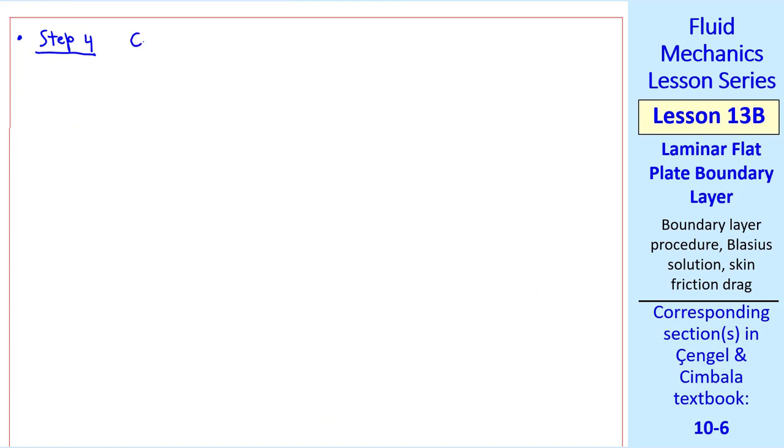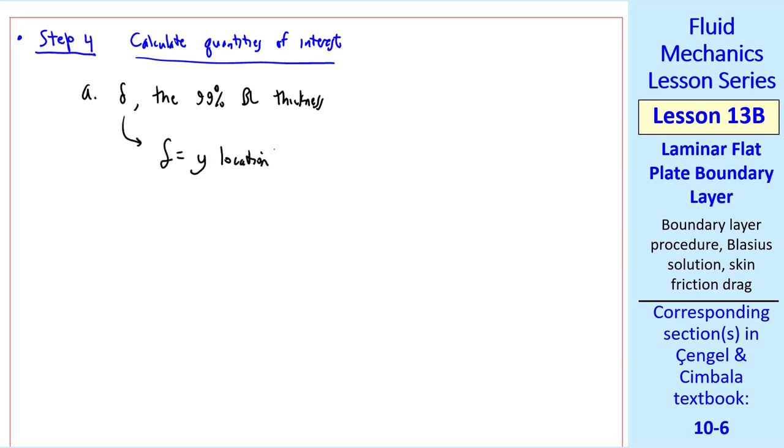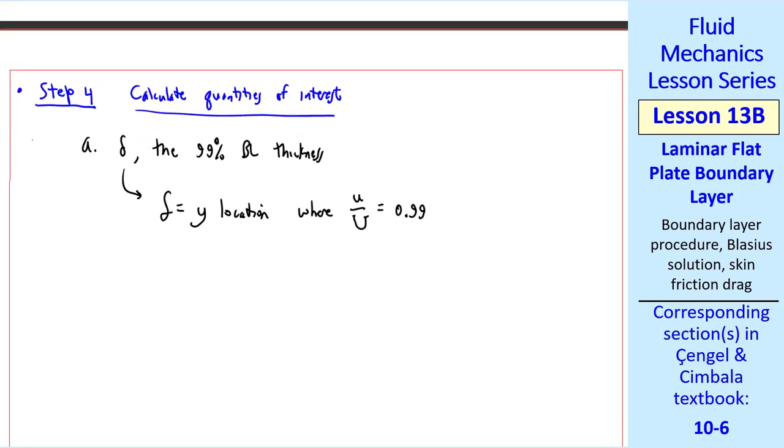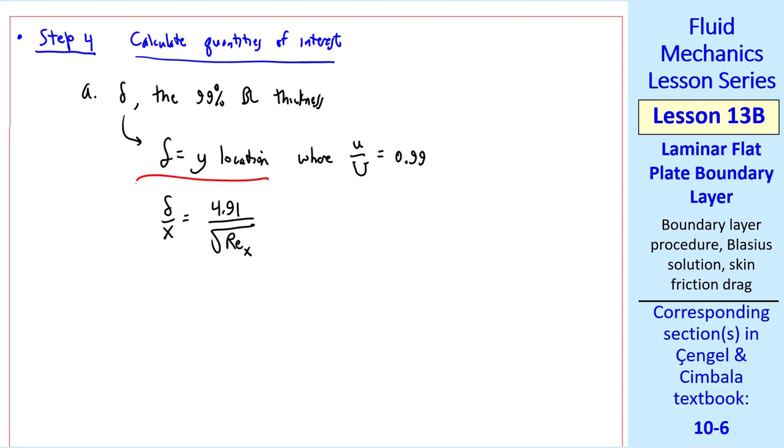Step four is to calculate quantities of interest. First, I'll calculate delta, the 99% boundary layer thickness. Delta is the Y location where U over capital U equals 0.99. From our plot, we see that this occurs at eta near 5, where this distance is eta at delta. Thus, it turns out, after a little bit of math, that delta over X is 4.91 over the square root of REx, where REx is rho ux over mu, or ux over nu.